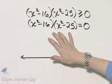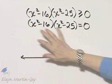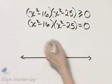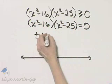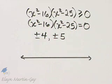And solve this related equation. This is the difference of two squares, it factors further. Same thing here, this factors further. You will have plus or minus 4 as solutions, and also plus or minus 5.